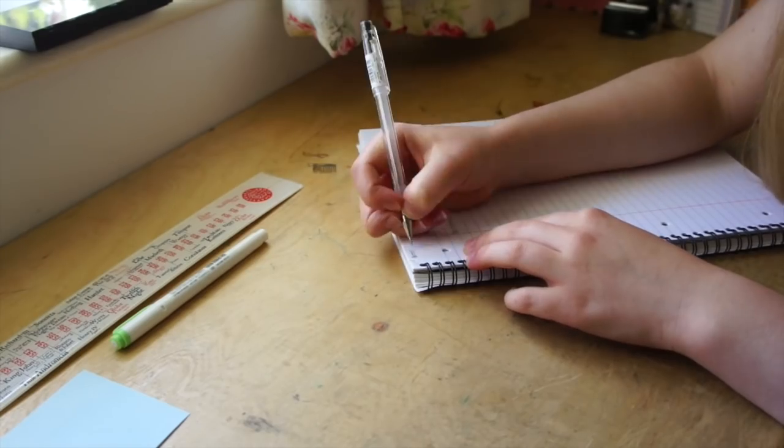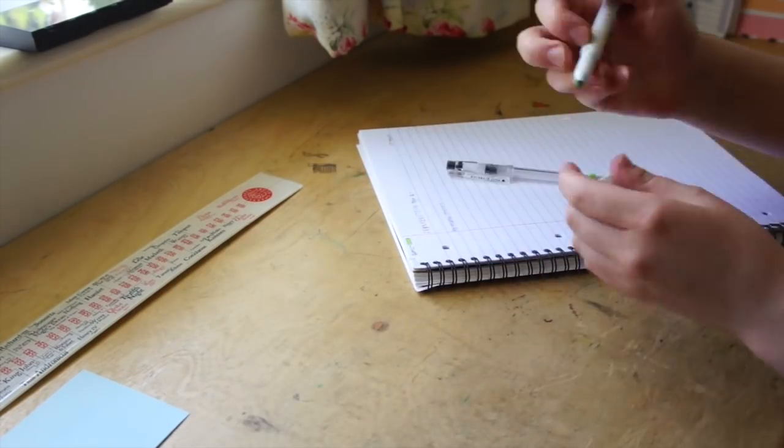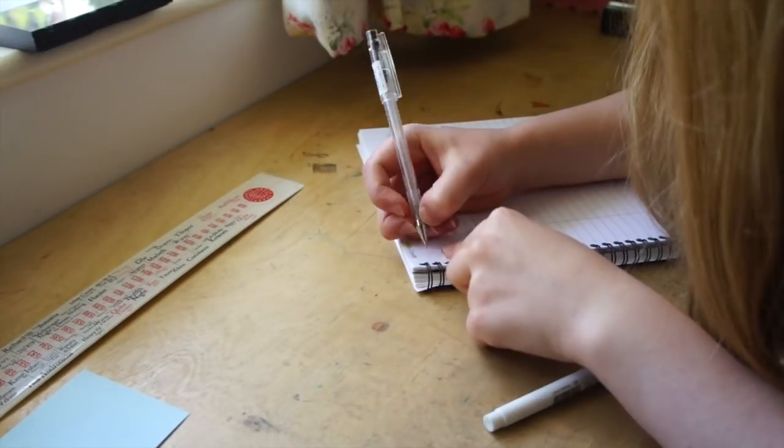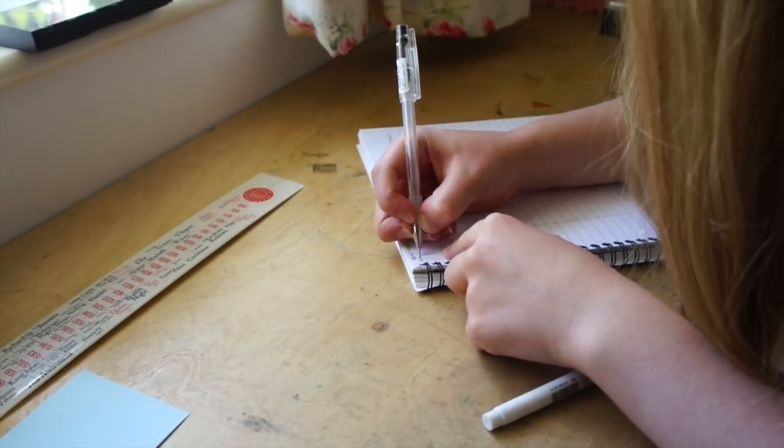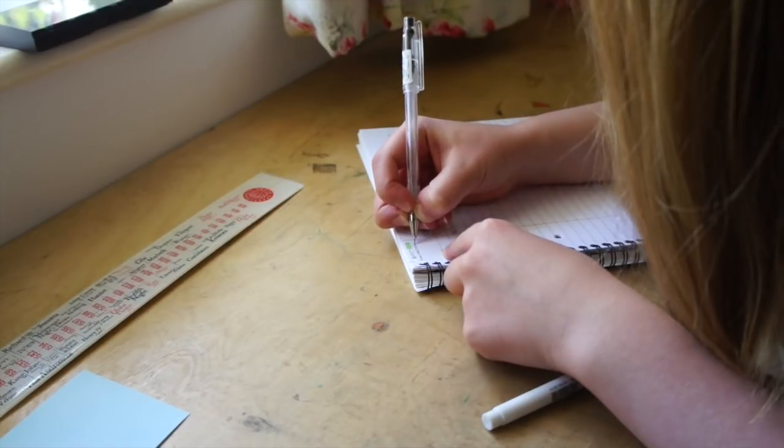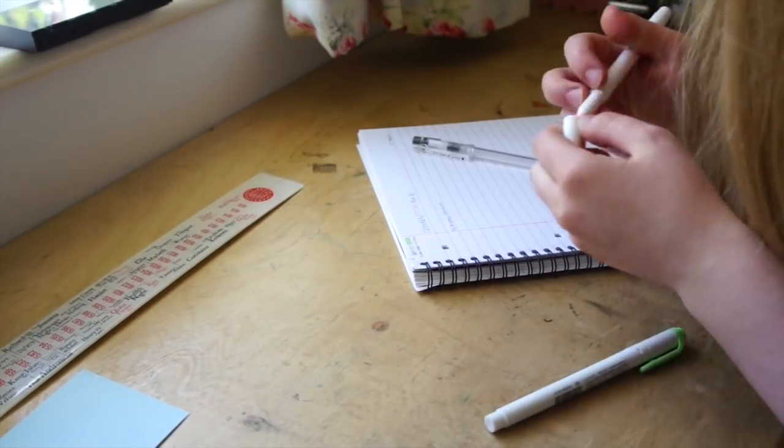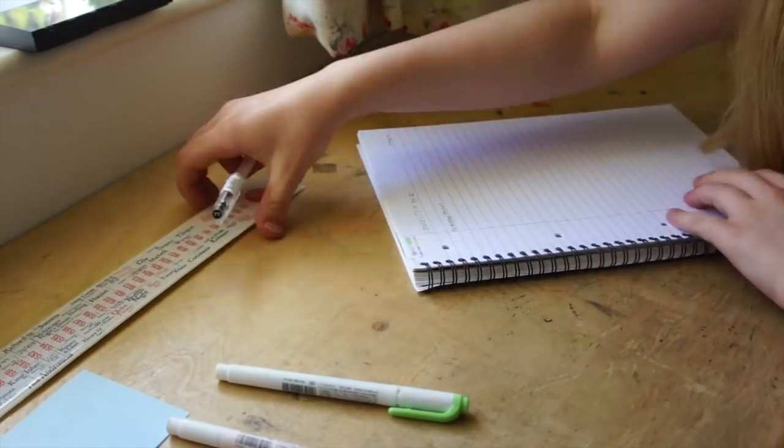So another thing I like to do is make a key in the top corner, and this is for when I highlight things in the text itself. So I am using green for just general things that are quite interesting, and then a peachy color for links to Paradise Lost.